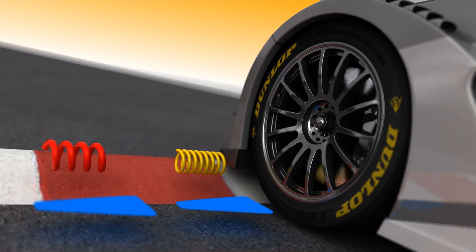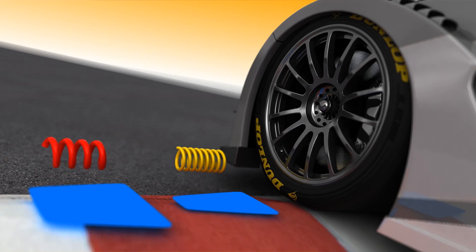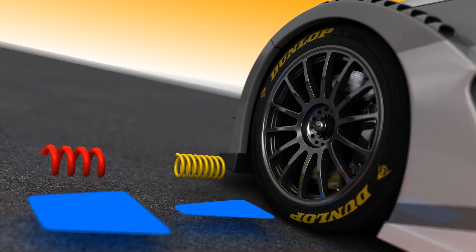Handling on very uneven surfaces becomes more predictable and the car is steadier. Getting the chassis suspension right can make the difference between victory and defeat.